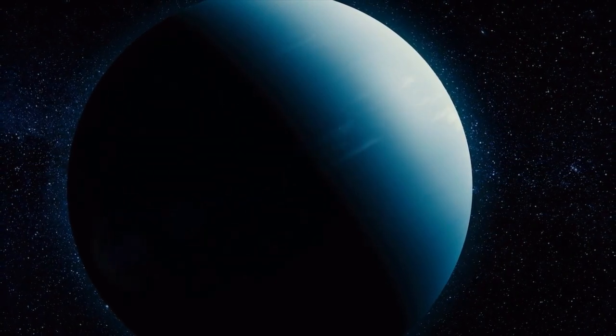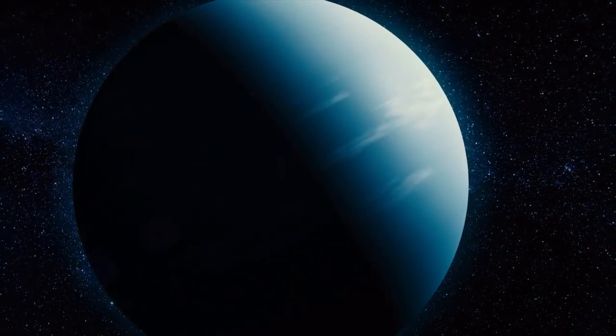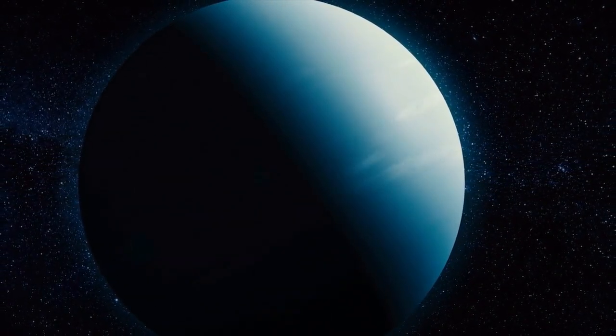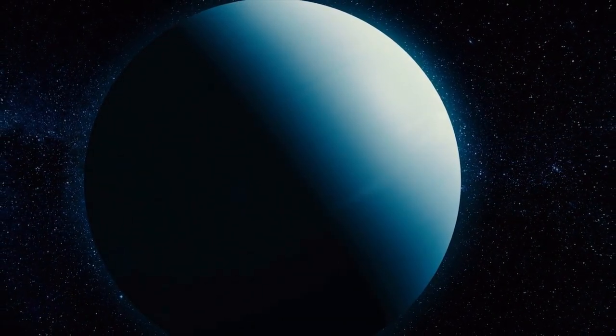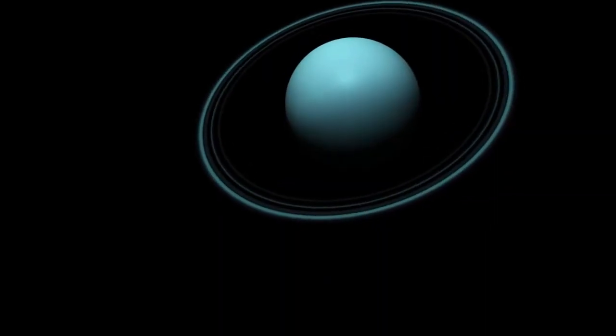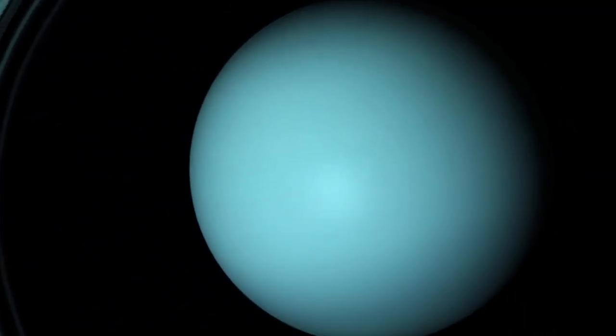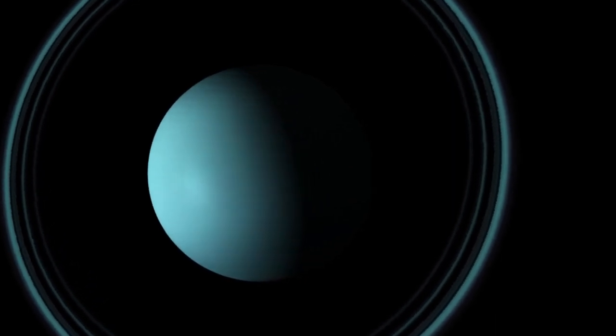Uranus is the only planet in the solar system that rotates on its side, with its poles lying almost in the plane of its orbit. Uranus' rings are much darker and less reflective than those of other gas giants, making them difficult to see from Earth.